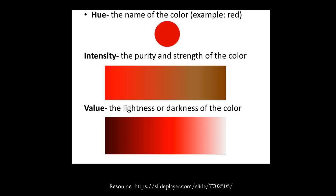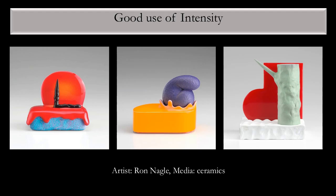Let's take a look at intensity — the purity and strength of a color. Look at how intense that is, and as we start to work down we get the value, the lightness and darkness. We're adding black, adding white, going through the value. Here's a good use of intensity: Ron Nagel, based out of San Francisco — look at the intensity of that color. Isn't that intense? This is interesting because we have low intensity juxtaposed with this high intensity piece, and that really makes the low intensity background cause the high-intensity area to pop.